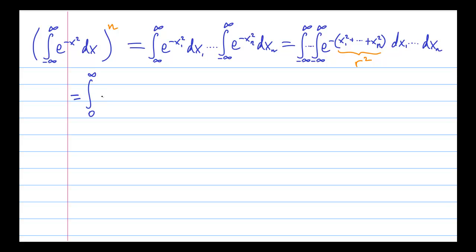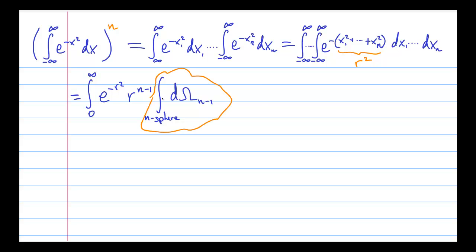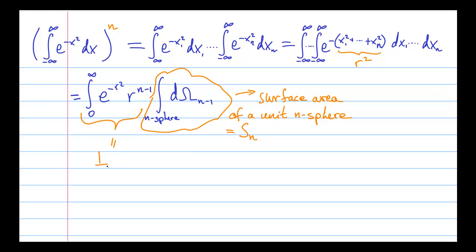And as before, we separate the integral into the radial part and the angular part. It turns out that the angular part, which you can think of as an integral over a solid-angle element of an n-dimensional hypersphere, gives you exactly the surface area of a unit n-sphere. And so we rewrite this as the radial integral times S_n, which is the surface area of the unit n-sphere, and the radial integral turns out to give you the gamma function.